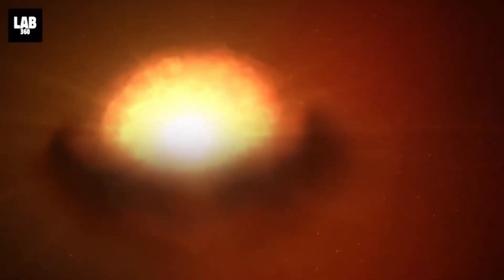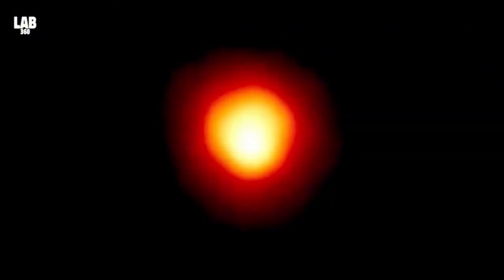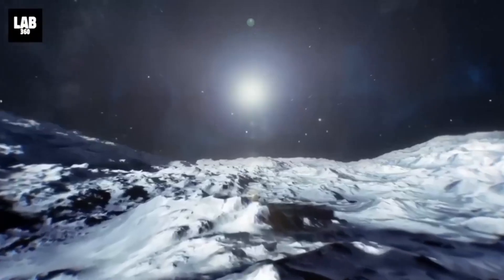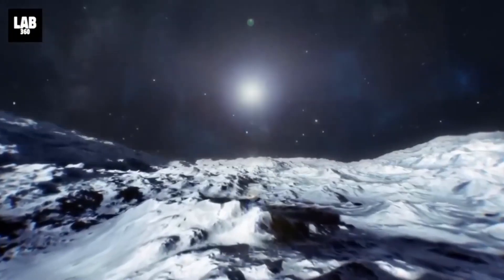Betelgeuse, located roughly 640 light-years away, is a red supergiant star nearing the end of its stellar life cycle. With a diameter approximately 1,000 times that of the sun, it is so large that if placed in the center of our solar system, its outer layers would extend beyond the orbit of Jupiter.